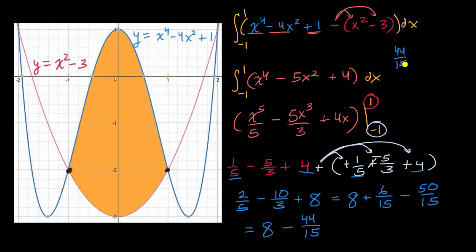And so what is forty-four over fifteen? Forty-four over fifteen is equal to two and fourteen-fifteenths. So that's really what we're subtracting. We're going to subtract two and fourteen-fifteenths. So if you subtract two from this, you would get six minus fourteen over fifteen. Because we still have to subtract the fourteen-fifteenths. And then six minus fourteen-fifteenths is going to be equal to five and one-fifteenth. So just like that, we were indeed able to figure out this area.